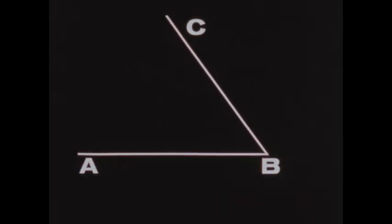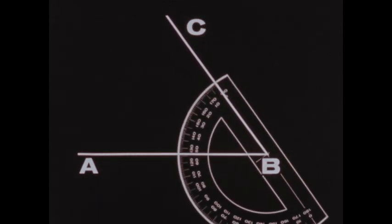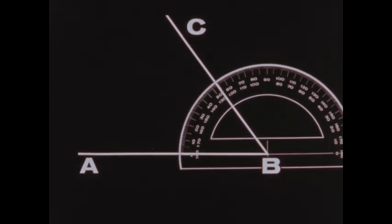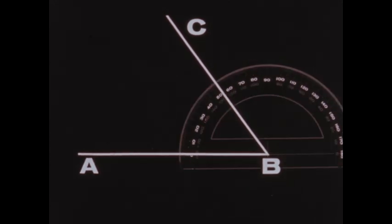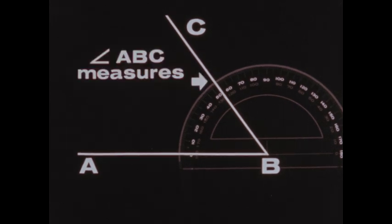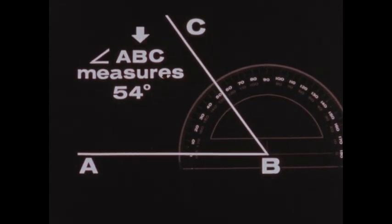How can we measure an angle lying in this position? We could do this by turning the protractor to this position. However, we could do this more easily by turning the protractor this way. The zero mark of the protractor remains on the vertex of the angle. Now we use the outer set of degree readings. We see that angle ABC measures 54 degrees. Remember, the vertex letter is always the middle letter in naming an angle of three letters.